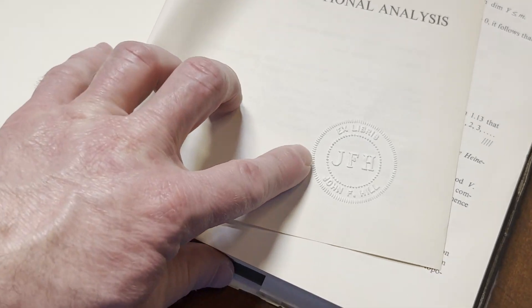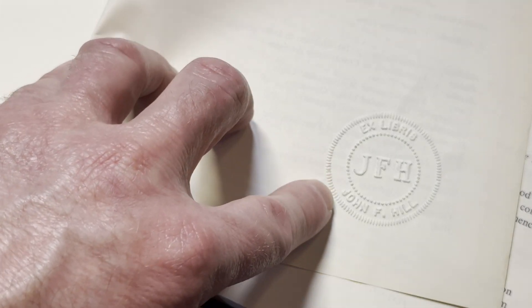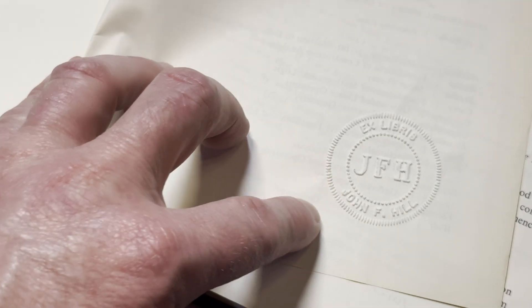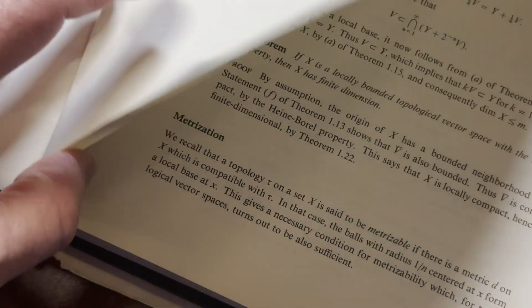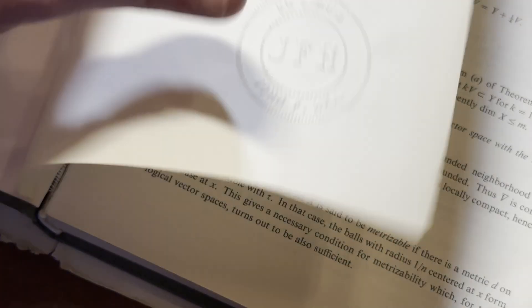For example, here it says 'Ex Libris JFH—John F. Hill.' Maybe that's the library name or maybe that's a person. Probably the library name because it says Ex Libris, unless they wanted to emphasize that... Oh no, John F. Hill is the previous owner.